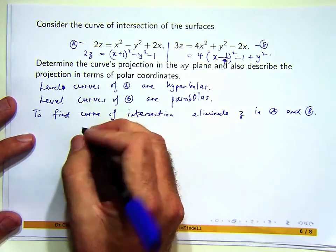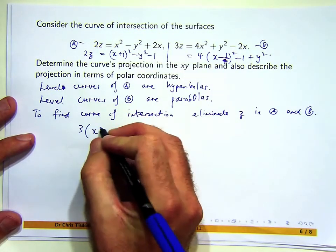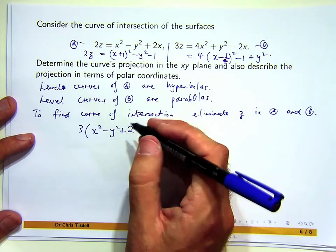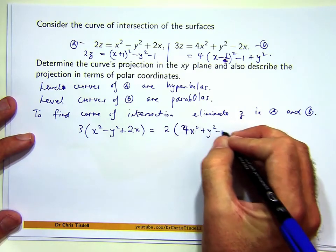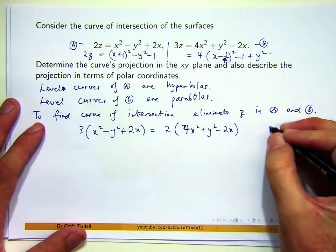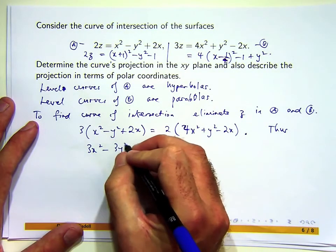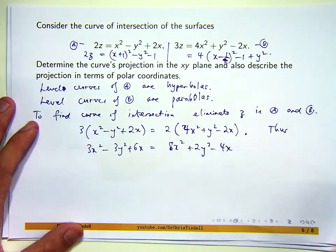That's pretty easy. We've got 3 times z, so if I take the z from here, I'll get this. This is going into there. Now if I rearrange that, I should be able to get some relationship involving x and y which will give me some sort of curve. If I expand the brackets and simplify, I'll get 3x² - 3y² + 6x = 8x² + 2y² - 4x.